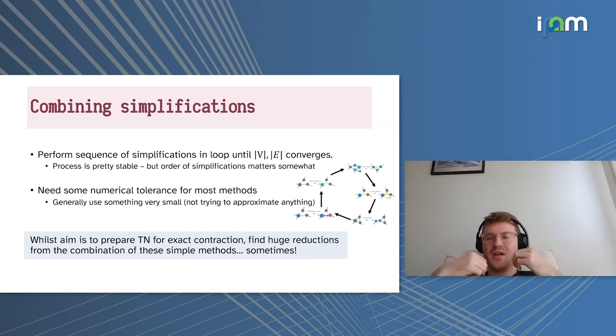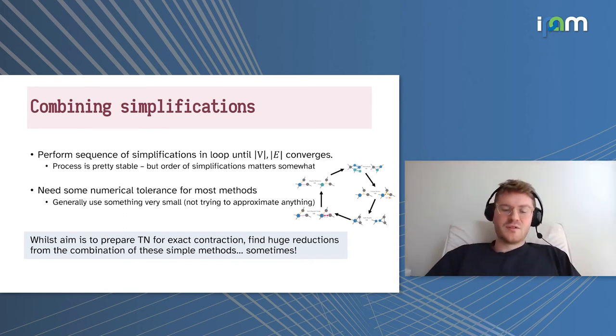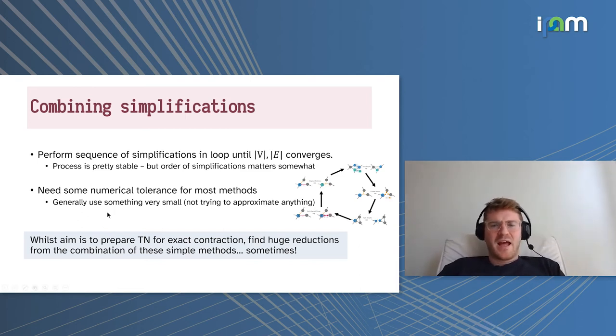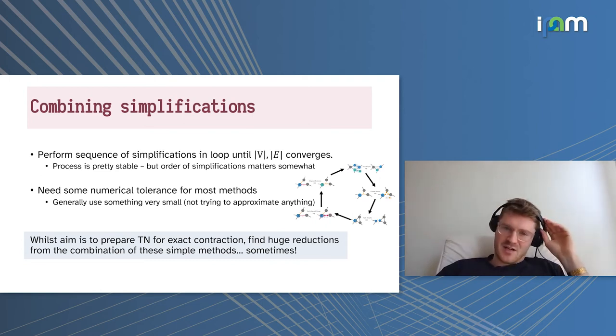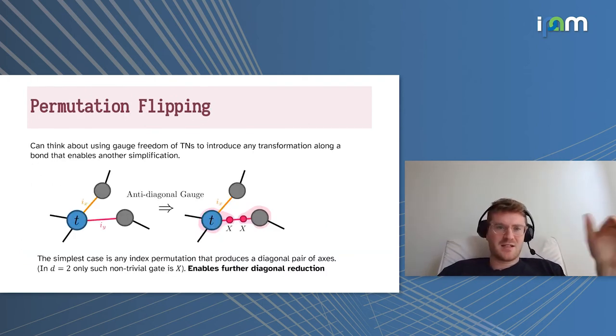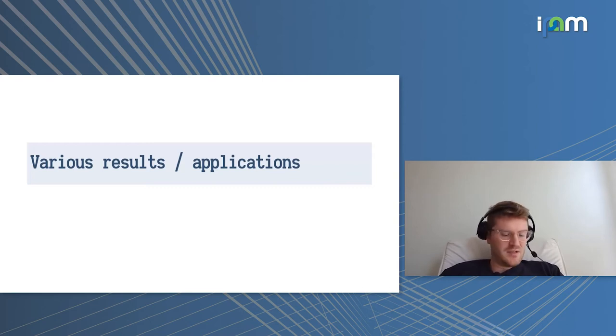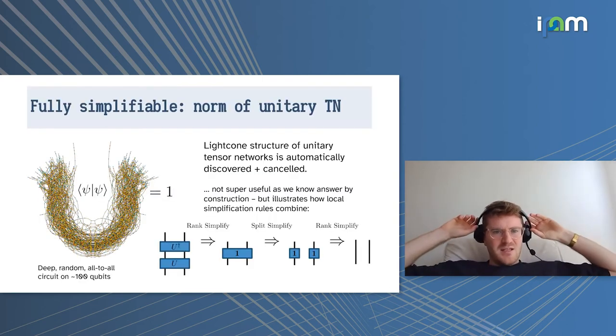Just performing these things in a loop is surprisingly powerful. We just run them through in a cyclic order until the size of the graph converges, and it's slightly dependent on the order you perform them in but not very. We have some numerical tolerance for doing these methods, but generally that's close to machine precision. These are mostly just exact simplifications that I'm talking about at this point. While our general aim is to just make the tensor network easier to contract exactly, you sometimes find these huge reductions in the size of the tensor networks for certain cases, which I'll talk about now.